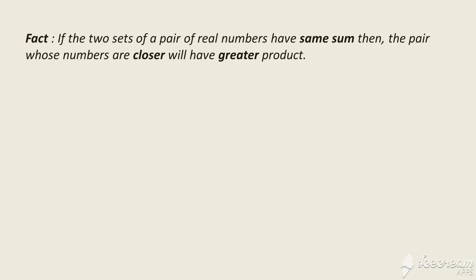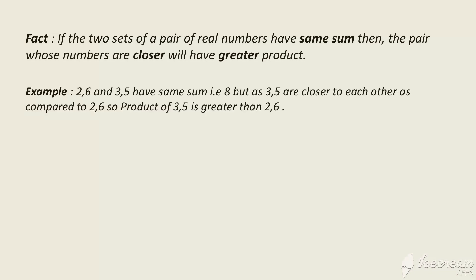Let me give you an example. If we have two pairs like 2 and 6, and 3 and 5 — as we can see, both have the same sum, that is 8, but 3 and 5 are closer to each other as compared to 2 and 6. So the product of 3 and 5 will be greater than the product of 2 and 6.